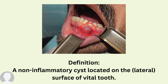Lateral periodontal cyst is a non-inflammatory cyst located, as the name suggests, on the lateral surface of a vital tooth. When you do clinical examination for your patient, you will see that the teeth associated are vital and non-carious. It will be discovered by chance radiographically. Because it is a non-inflammatory cyst, it is not associated with inflammation or caries.